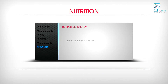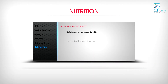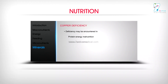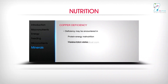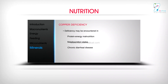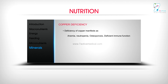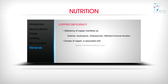Copper deficiency may be encountered in protein-energy malnutrition, malabsorption states, and chronic diarrheal disease. Manifestations include anemia, neutropenia, osteoporosis, and deficient immune function. Excess of copper is associated with Wilson disease and Indian childhood cirrhosis.